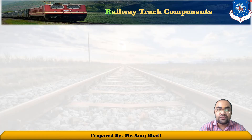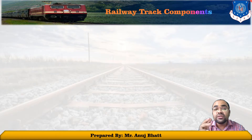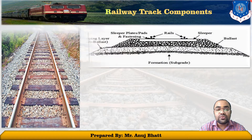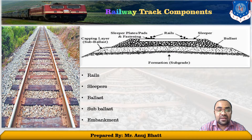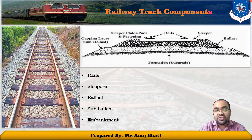The components of railway tracks. There are many components of railway tracks but a few of them are prime components without which a railway track cannot be constructed. Those are rails, sleepers, ballast, sub-ballast, and embankment. Here in the figure, a cross-section and the actual railway track is already shown.